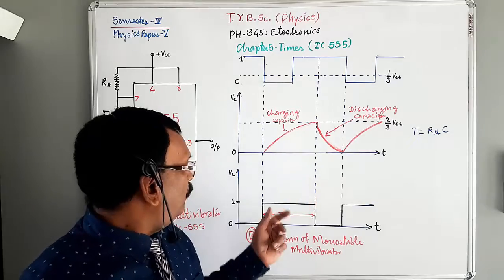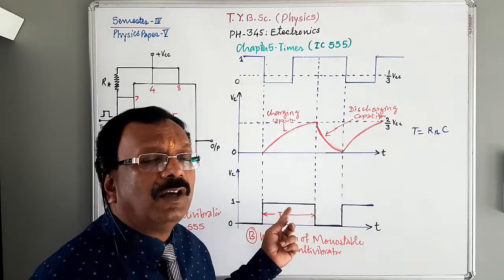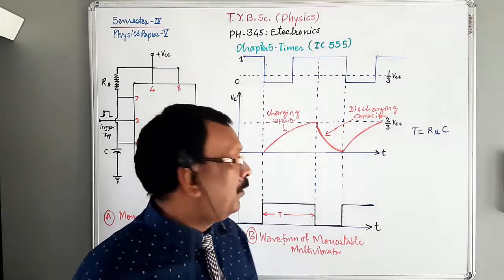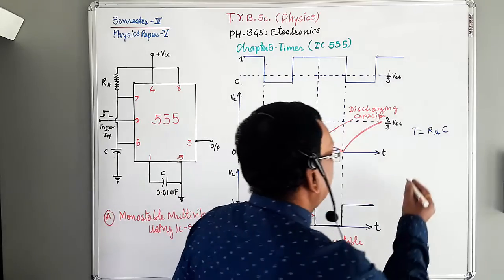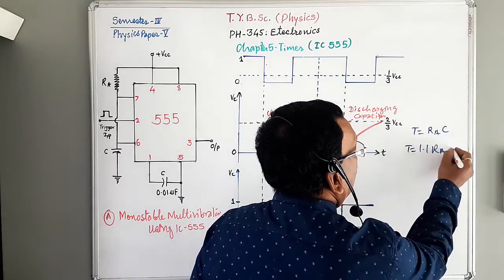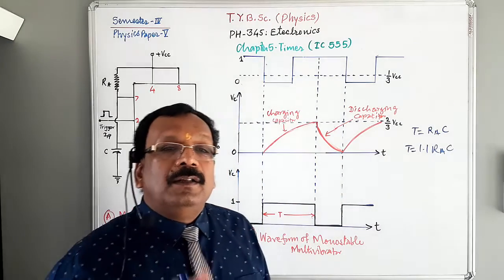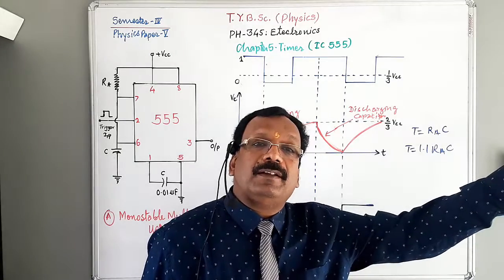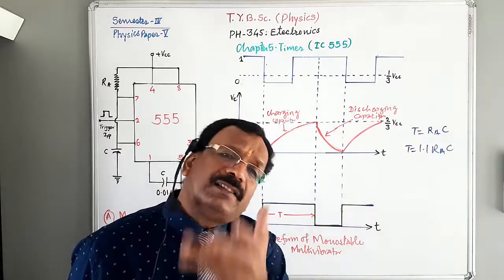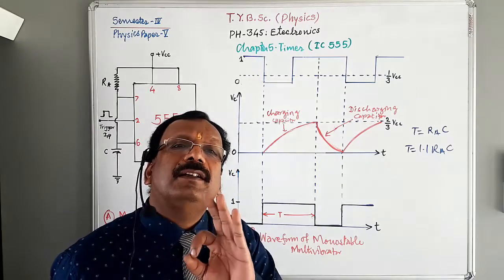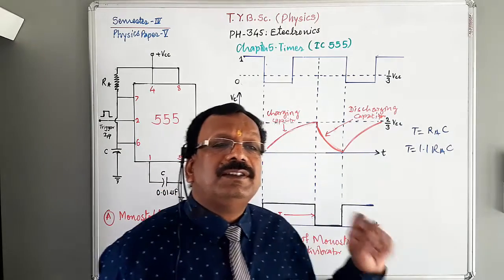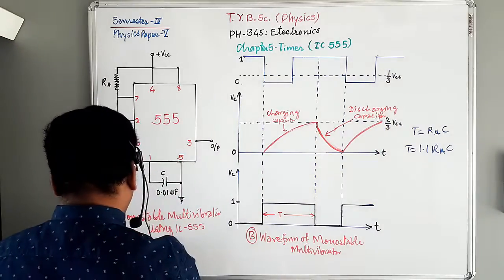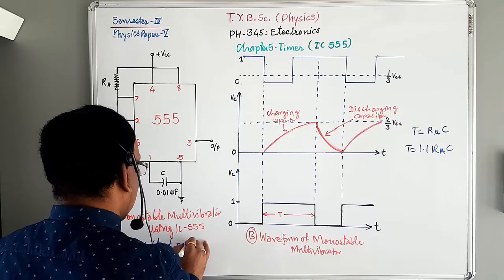The output timing interval T of the monostable multivibrator is given by T = 1.1 RAC. The monostable multivibrator, unlike the astable (free-running) multivibrator, produces a single output pulse once triggered. For this reason, the monostable multivibrator is sometimes called a one-shot multivibrator.